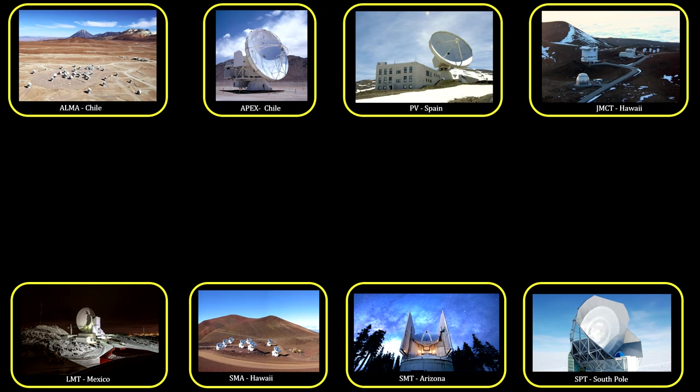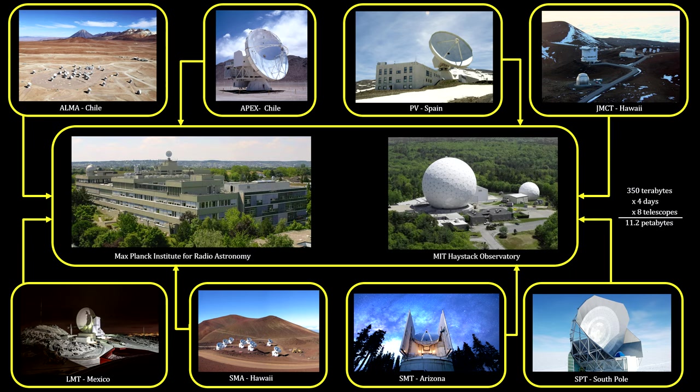Each telescope produced roughly 350 terabytes of data per day. This data was stored on high-performance hard drives and flown to highly specialized supercomputers at the MIT Haystack Observatory and the Max Planck Institute for Radio Astronomy, where the data was combined.